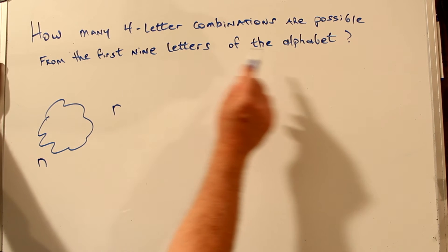In this case, your universe is nine letters of the alphabet, nine, and you're going to be making four-letter combinations, two, three, four. So r equals four. n equals nine, r equals four.